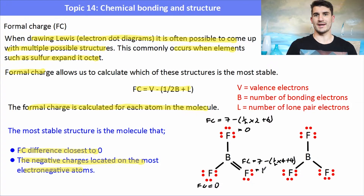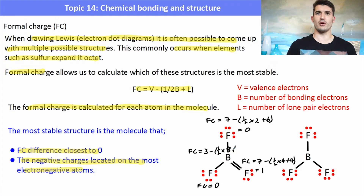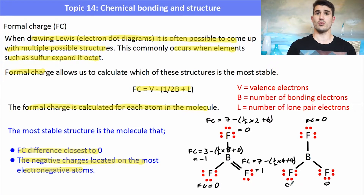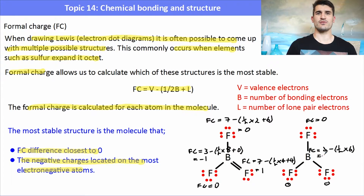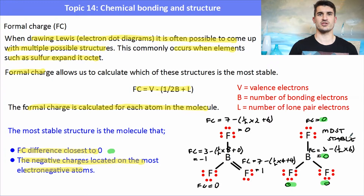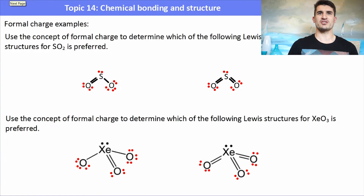We also need to calculate the formal charge on the boron. Boron has three valence electrons, and then we take that away from a half times the number of bonding electrons. Here boron has four bonds, so it has eight bonding electrons and no lone pairs, giving it a formal charge of minus one. In the example on the left, we've got three fluorines each with a formal charge of zero, and then the boron has a formal charge of zero as well because it doesn't have a double bond. So the example on the left is closest to zero, meaning that molecule will be the most stable configuration of the two.